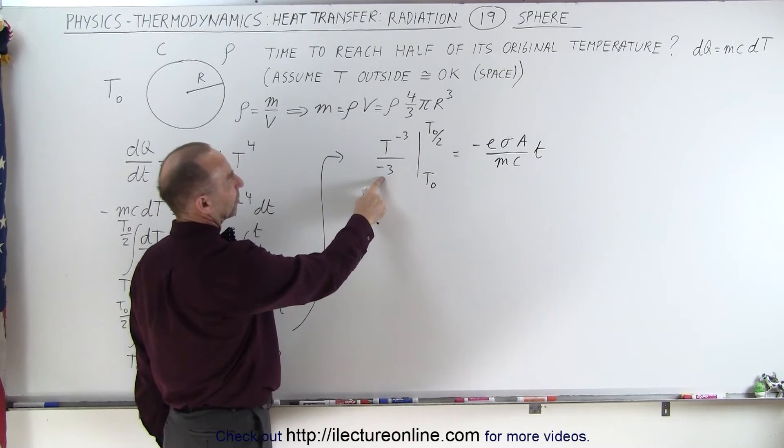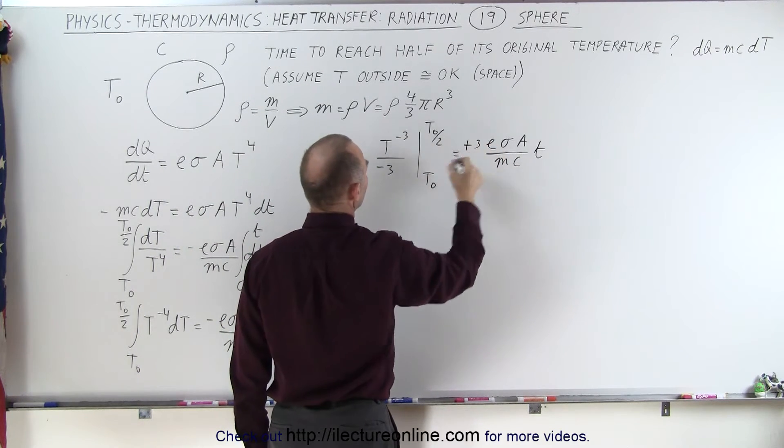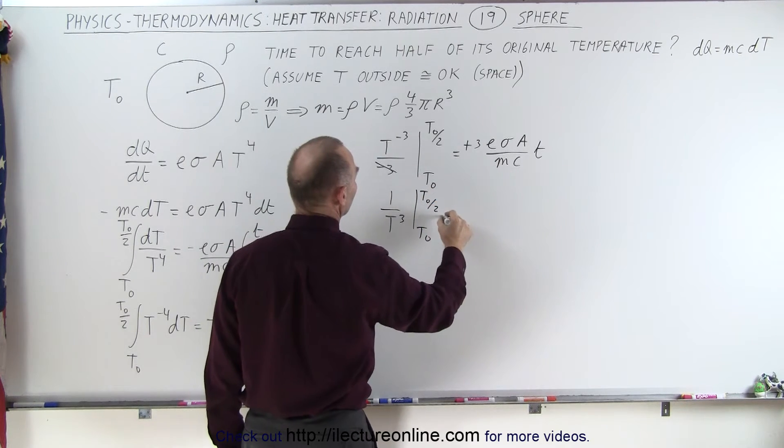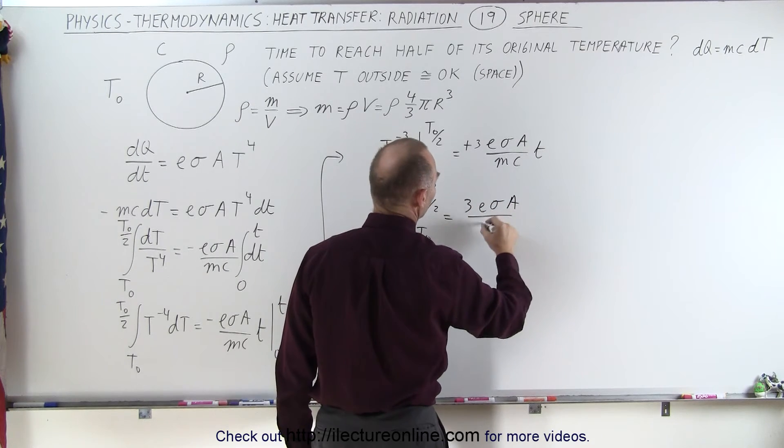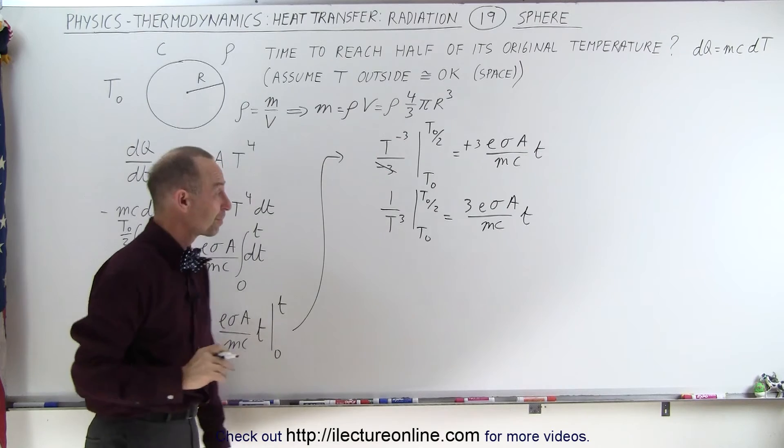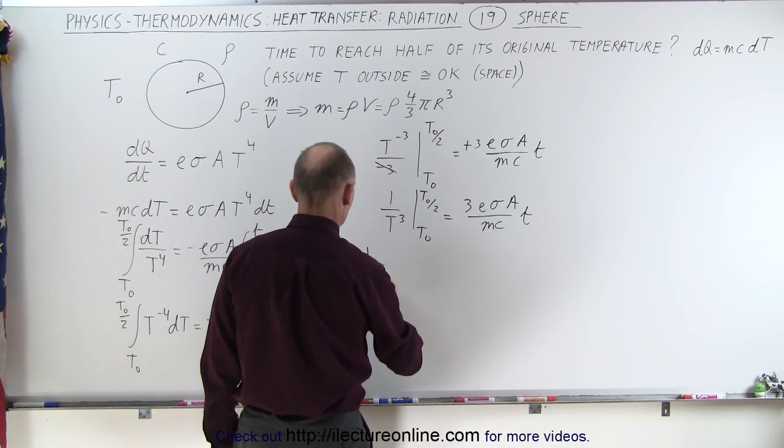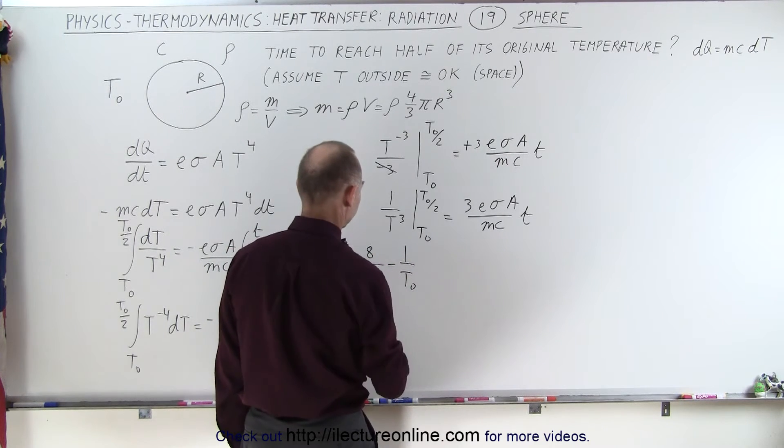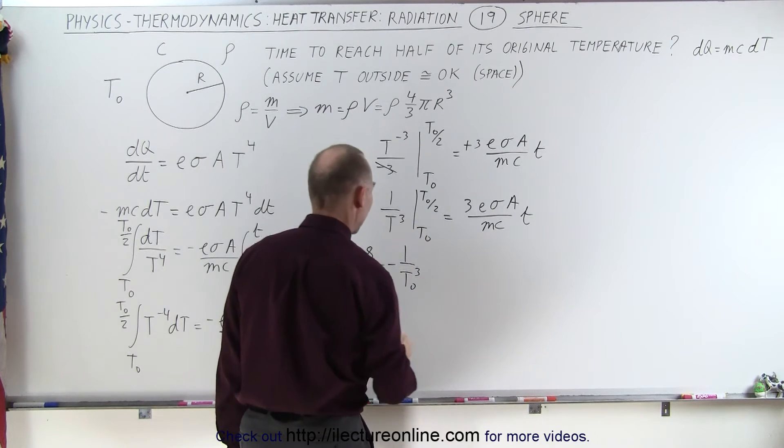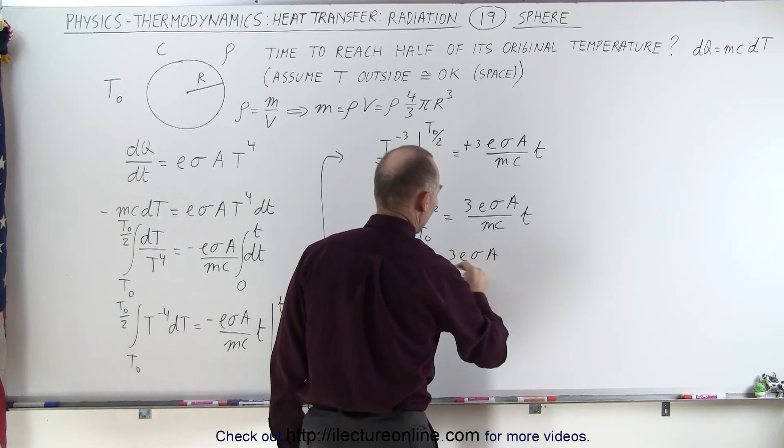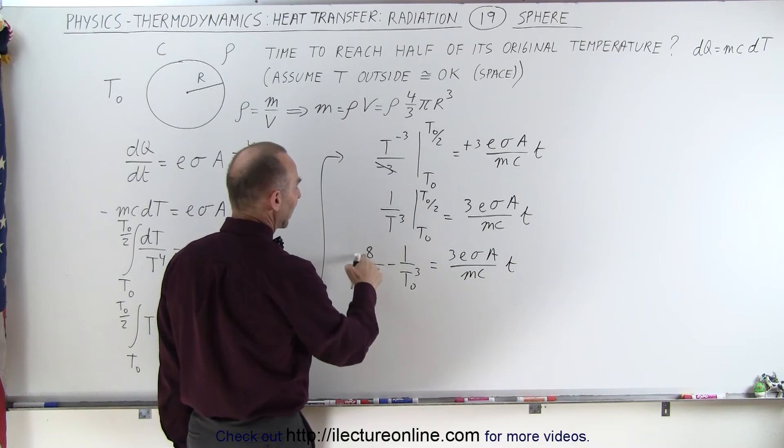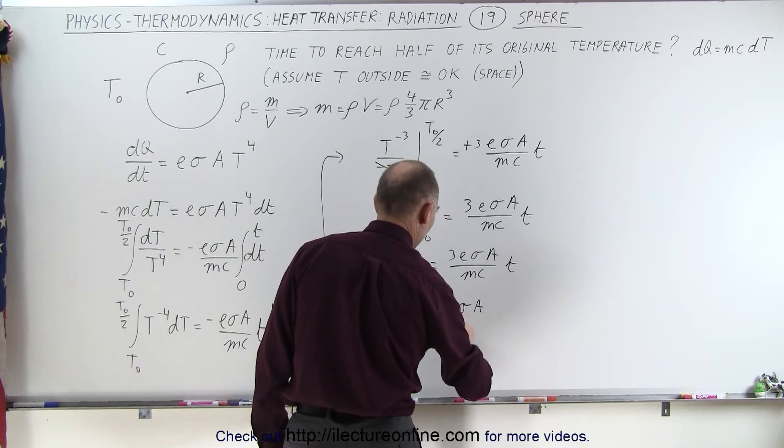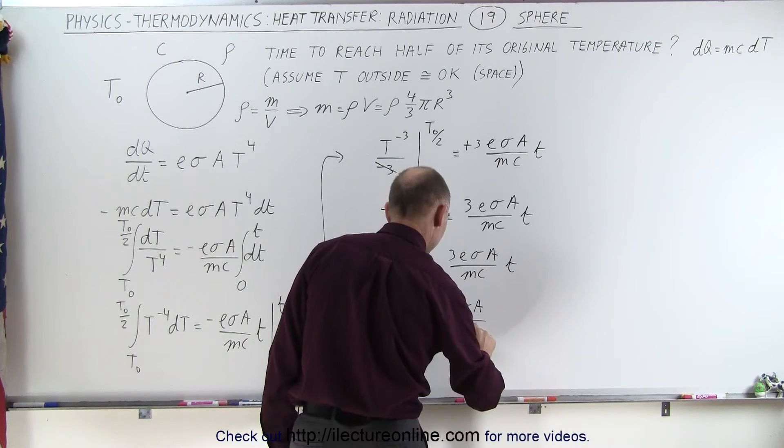Let's get rid of the minus three on this side. We bring it to the other side, that becomes plus three, and we get rid of the minus three. And so this becomes one over T cubed evaluated from T initial to T initial divided by two is equal to three epsilon sigma A over mc times t. When we plug in the limits on the left side, we get one over T initial cubed divided by eight, so I'm going to write the eight in the numerator, minus one over T initial cubed, is equal to three epsilon sigma A over mc times time. Since it's a common denominator, eight minus one is seven. This becomes seven divided by T initial cubed equals three epsilon sigma A over mc times t.